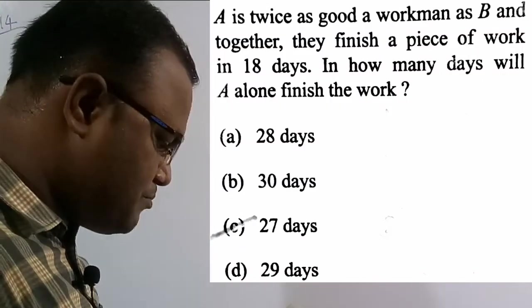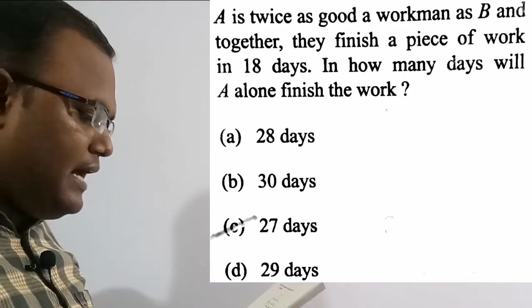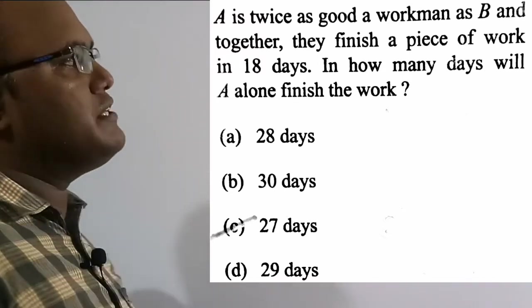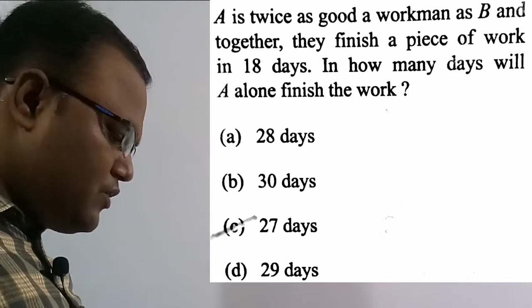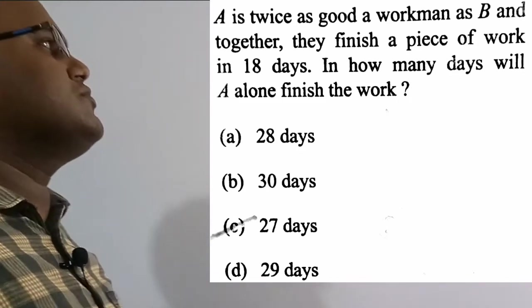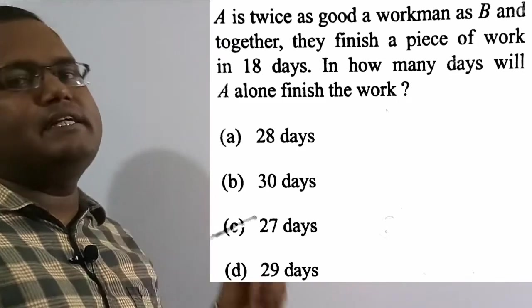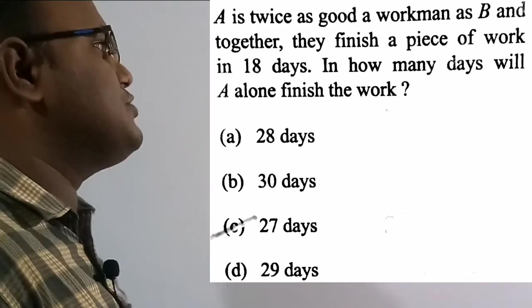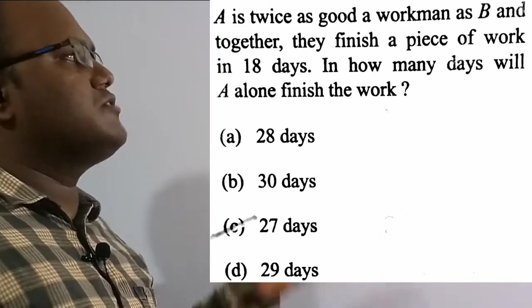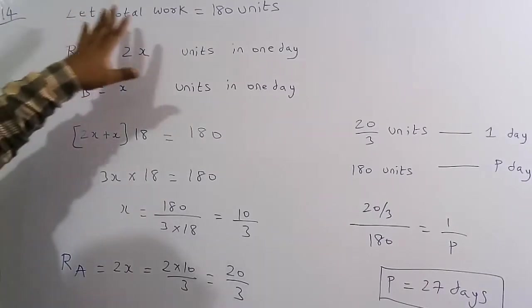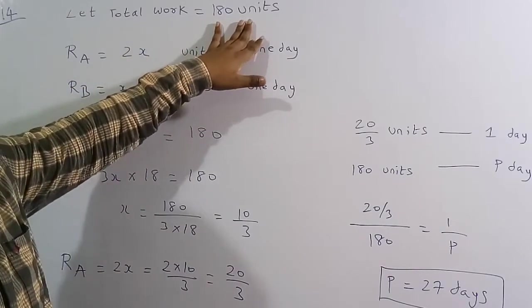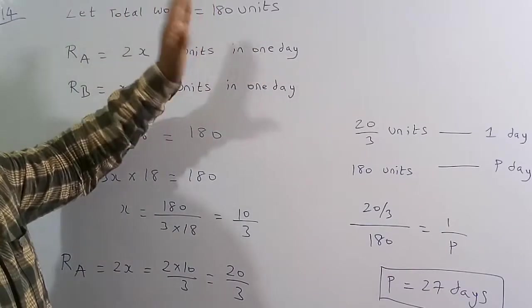Now solving the 14th question: A is twice as good a workman as B, and together they finish a piece of work in 18 days. In how many days can A alone finish the work? Option C, 27 days, is the correct answer. Assume total work = 180 units.